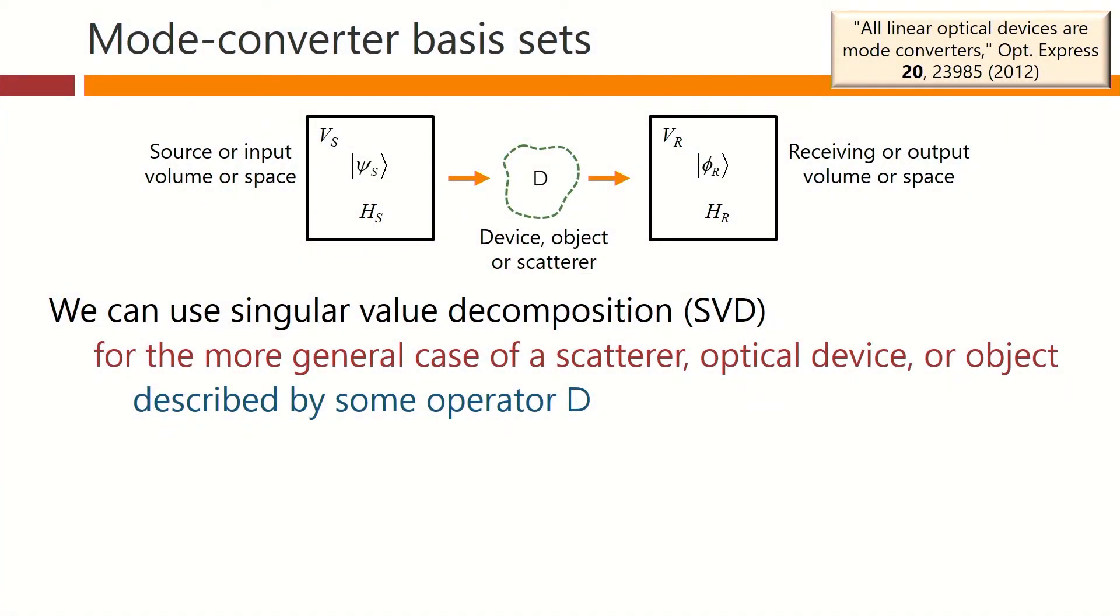Now we're going to look at the idea of singular value decomposition again, but for the more general case of a scatterer, optical device or object, described by some operator D. So instead of just having free space in here, we are allowing some other device. But whatever it is, we can describe it by a linear operator that maps from source functions to resulting wave functions.